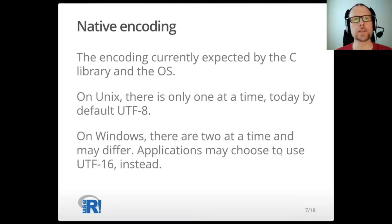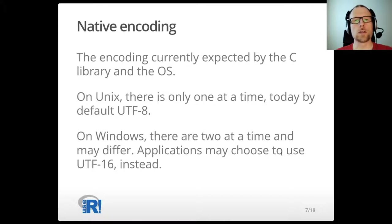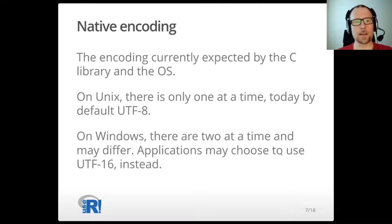Operating systems have the concept of native encoding — it is the encoding currently expected by the operating system and the C library in the strings passed to them. On UNIX there is one native encoding at a time, and today by default it is UTF-8, even though one can change it. On Windows things are more complicated: there are two current native encodings — one for the C library and one for the operating system — with additional details that complicate things. Applications may also choose to use UTF-16 instead, ignoring the encoding set by the locale.